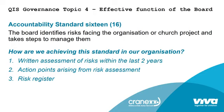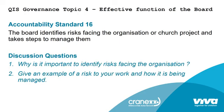Standard number 16: the board identifies risks facing the organization or church project and takes steps to manage them. Evidence includes: do you have a written risk assessment over the last two years, do you have action points arising from the risk assessments, and do you keep a risk register? The discussion questions are: why is it important to identify risks facing the organization, and can you give an example of a risk you face in your work and how it is being managed?